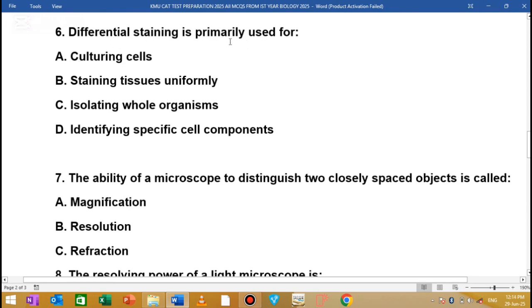Question 6 is about differential staining. Options include culturing cells, staining tissues uniformly, isolating whole organisms, and identifying specific cell components. Differential staining is used to identify specific cell components. Different colors help distinguish different components like nuclei or cytoplasm.